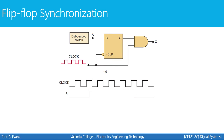Now we're going to figure out what signal X is going to look like with this modification. We start by looking at the output Q. Remember, this is a D flip-flop, which means Q will be whatever D is when the clock makes a negative transition — notice the bubble in front of the clock. In this case, input D is the input from the switch. So with each negative transition, the output Q is going to be whatever A is.